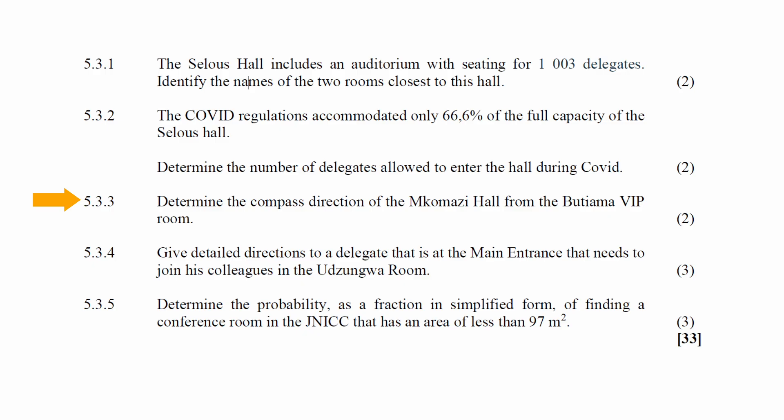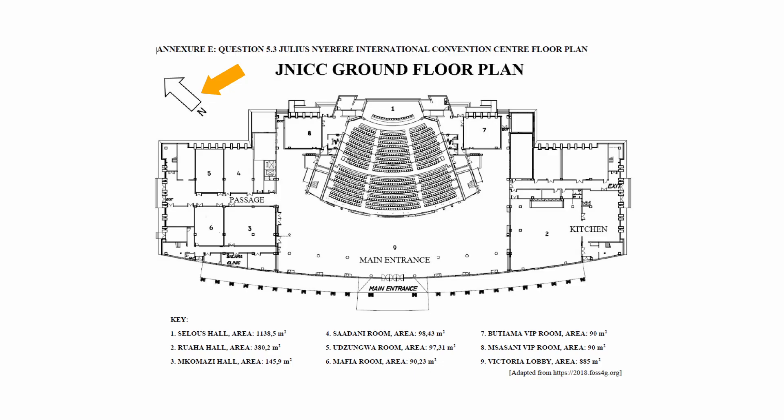In question 5.3.3, you are instructed to determine the compass direction of the Mukamazi Hall from the Butiyama VIP room. From the floor plan in Annexure E, the north arrow is given. The Butiyama VIP room is at number 7 and the Mukamazi Hall is at number 3. Given that north points upward, west is to the left, meaning the Mukamazi Hall is to the west or northwest of the Butiyama VIP room.